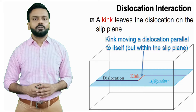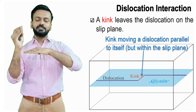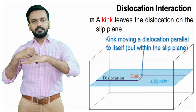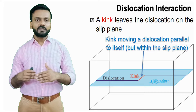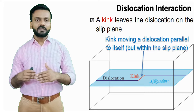What is a kink? A kink is when another dislocation interacts in such a way that it remains in the same plane. A kink leaves the dislocation on the slip plane — it moves the dislocation parallel to itself but within the same plane. That is a kink.